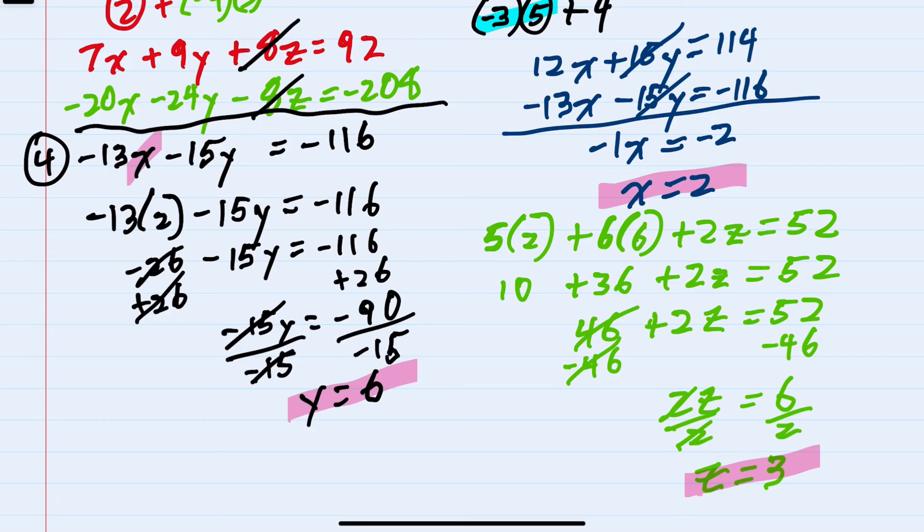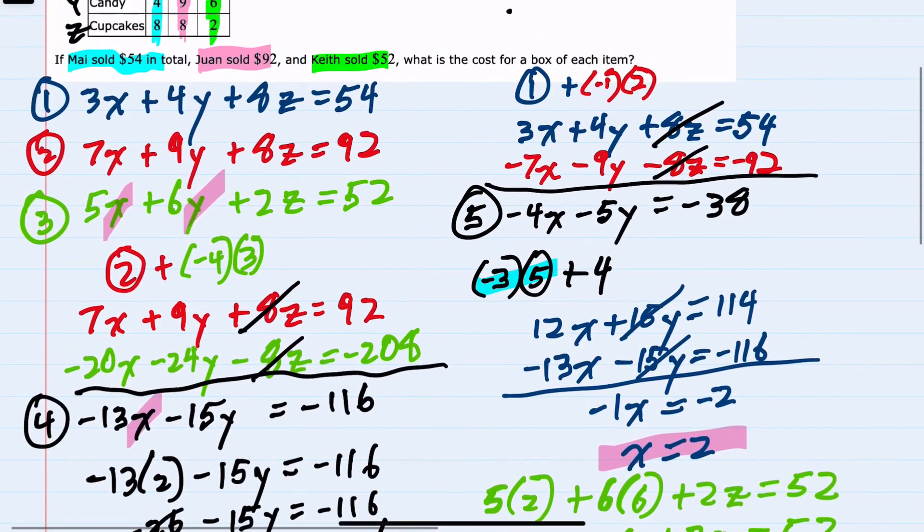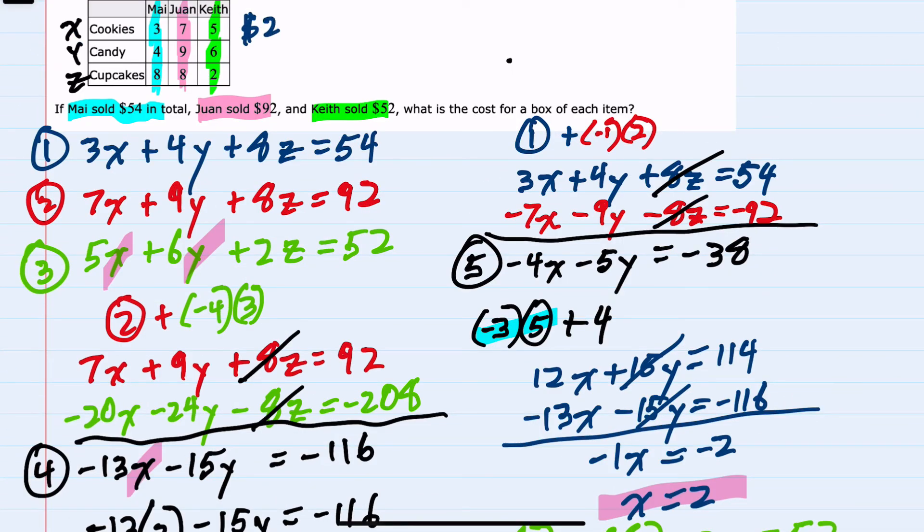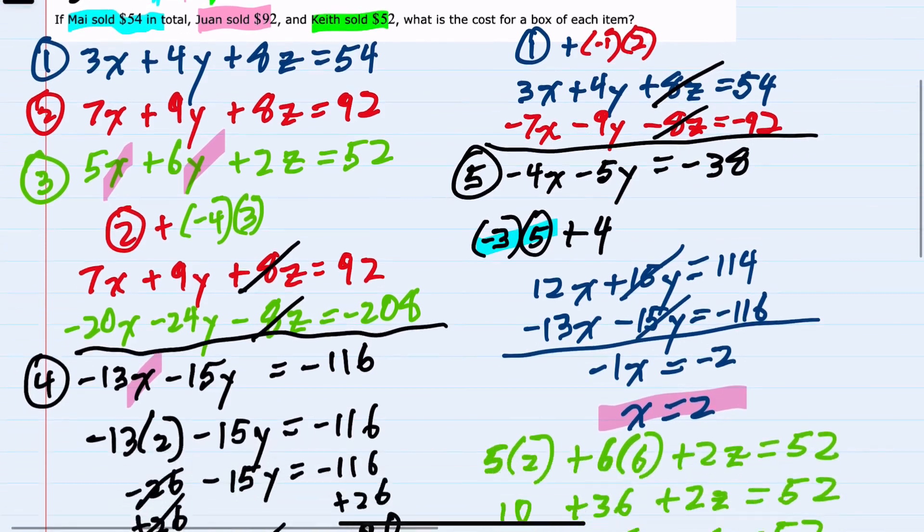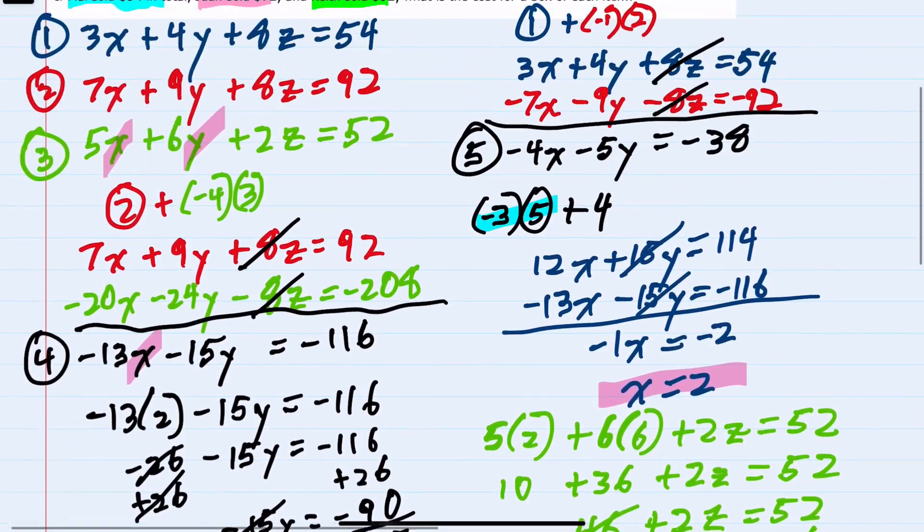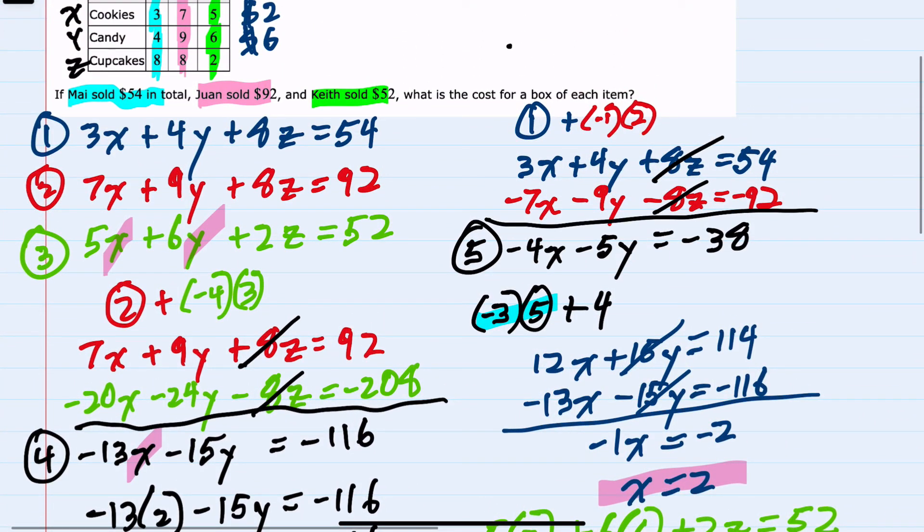So we have solved for X, Y, and Z. We now have the values for cookies which are $2, candy which is $6, and cupcakes Z is $3. We've solved for all three variables.